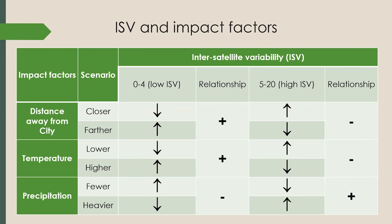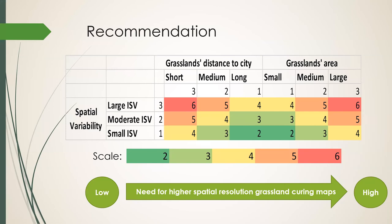Therefore, the necessity of using higher spatial resolution data increases when grasslands are closer to the city, temperature is lower, and precipitation is heavier. Based on the above results, I developed a simple decision support model on when and where to use higher spatial resolution satellite data for grassland curing observations. Numbers are arbitrarily assigned to indicate the necessity of using higher spatial resolution satellite data — the higher the number, the more necessary.